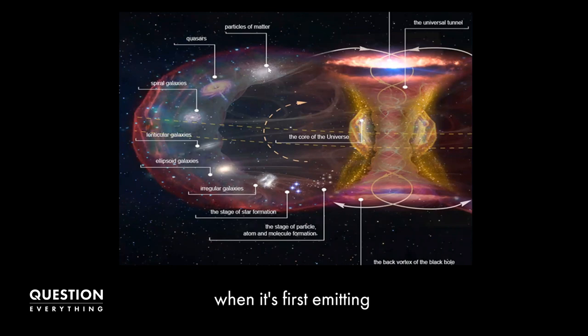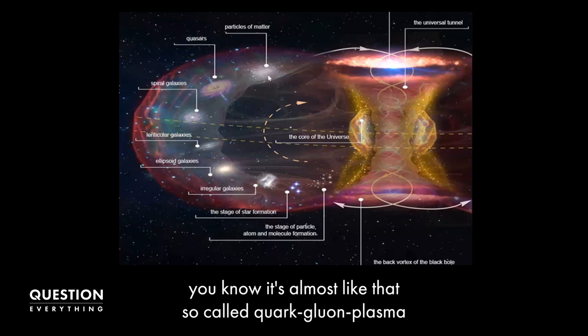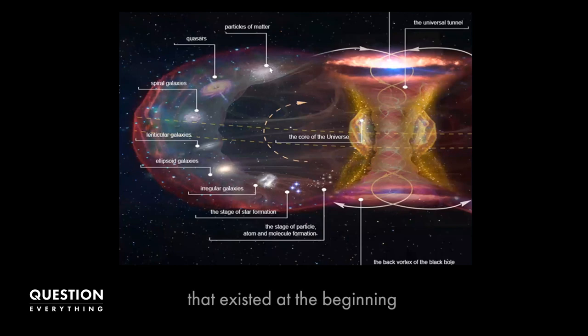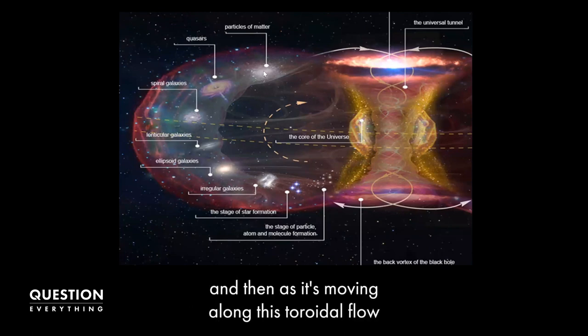So when it's first emitting, it's almost like that so-called quark gluon plasma that existed at the beginning. And then as it's moving along this toroidal flow,